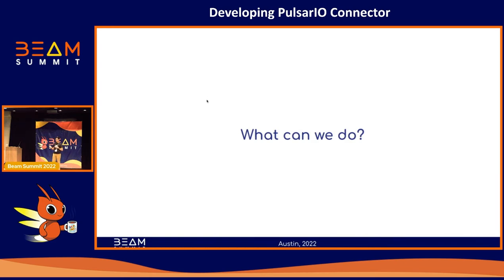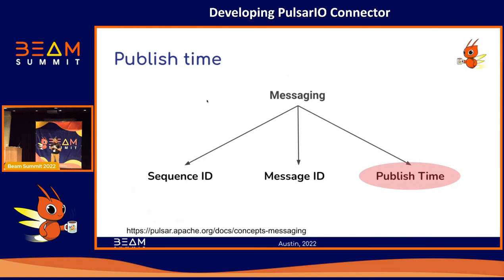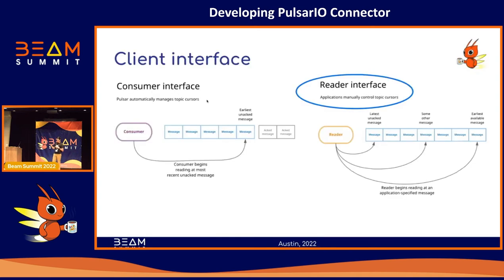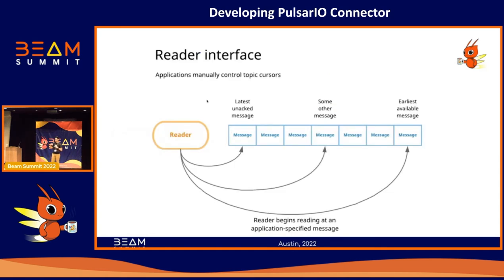The obvious choice is to use the publish time as the restriction. It is already assigned by the producer, so no extra configuration is needed, and the Pulsar API allows searching for a specific message by passing just its timestamp. Now that publish time is defined as the restriction, we also need to choose which client interface to use. The reader interface is the right choice because it allows us to handle cursors manually, which is necessary for working with the SDF inside Beam.